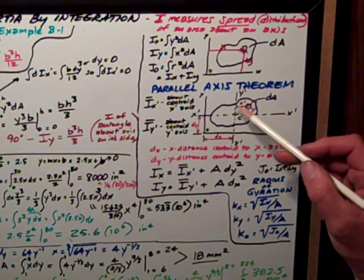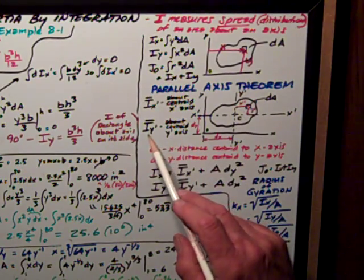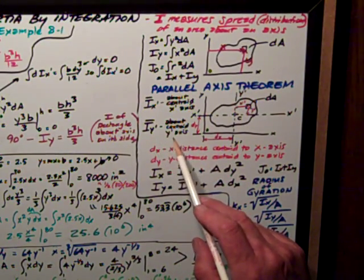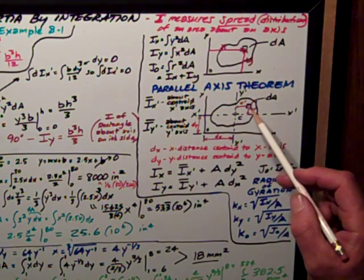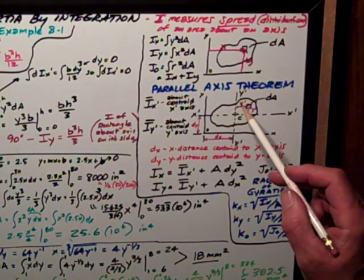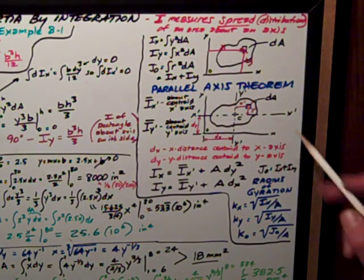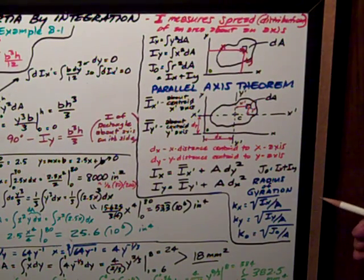Same thing for the centroidal moment of inertia about its y-prime axis is just this little elemental area, dA, times x-prime squared. So I can calculate that usually.